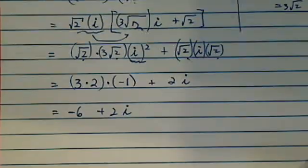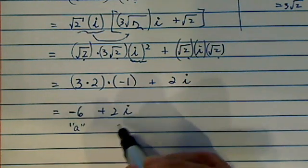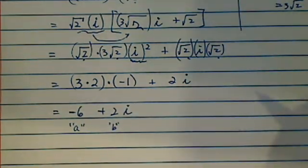So in your a plus bi form, this becomes a and this becomes b.